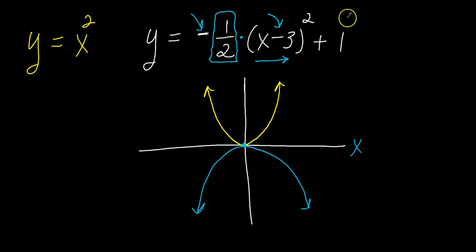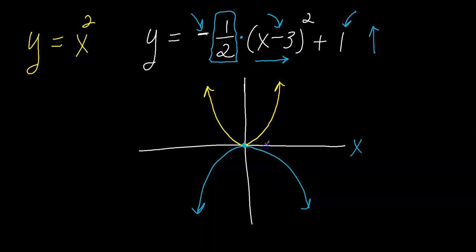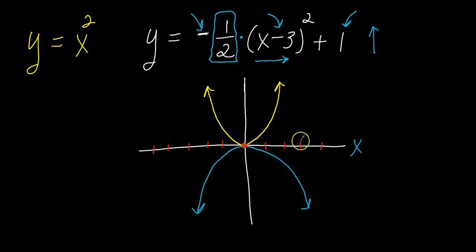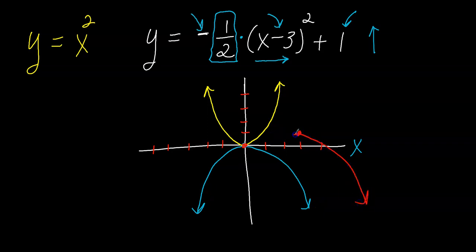The number at the end — the plus one — causes the graph to move up or down. You don't need to think backwards here; this just causes it to move up one unit. So I'll do my final graph in red. From the origin, I go to the right three and up one. That's my new vertex. I move this blue graph to that position, and that's my final sketched graph.